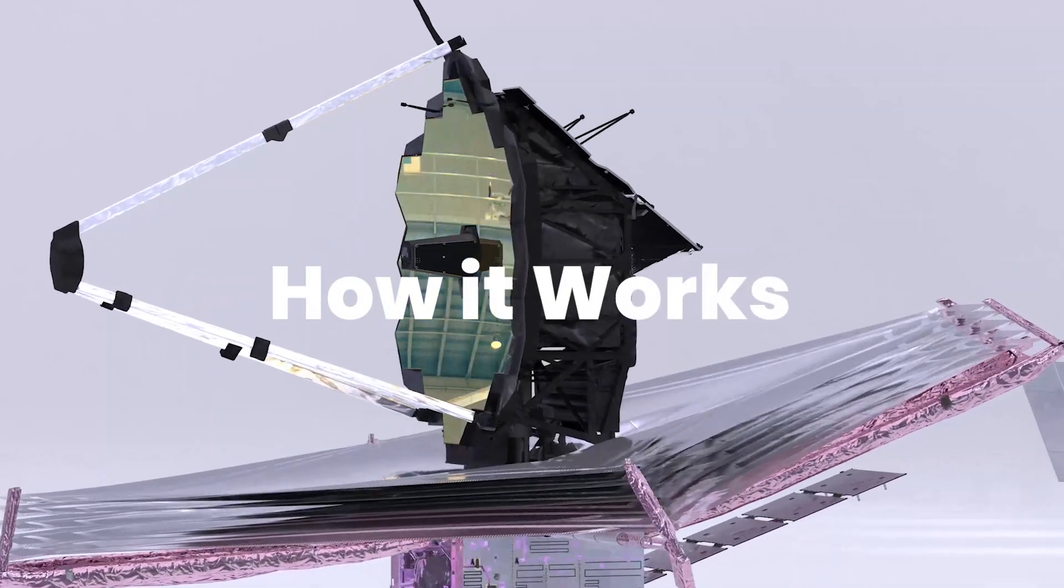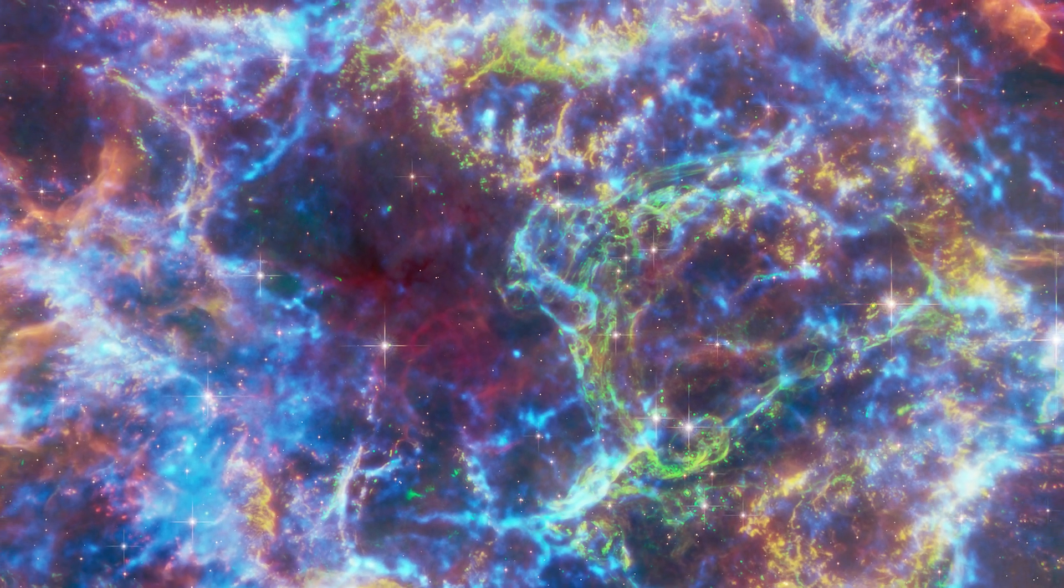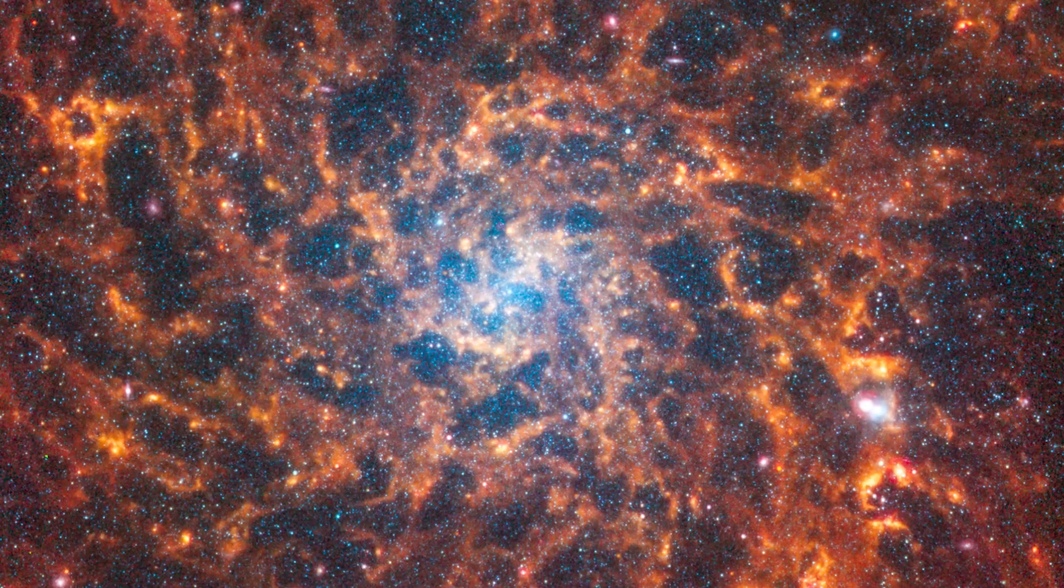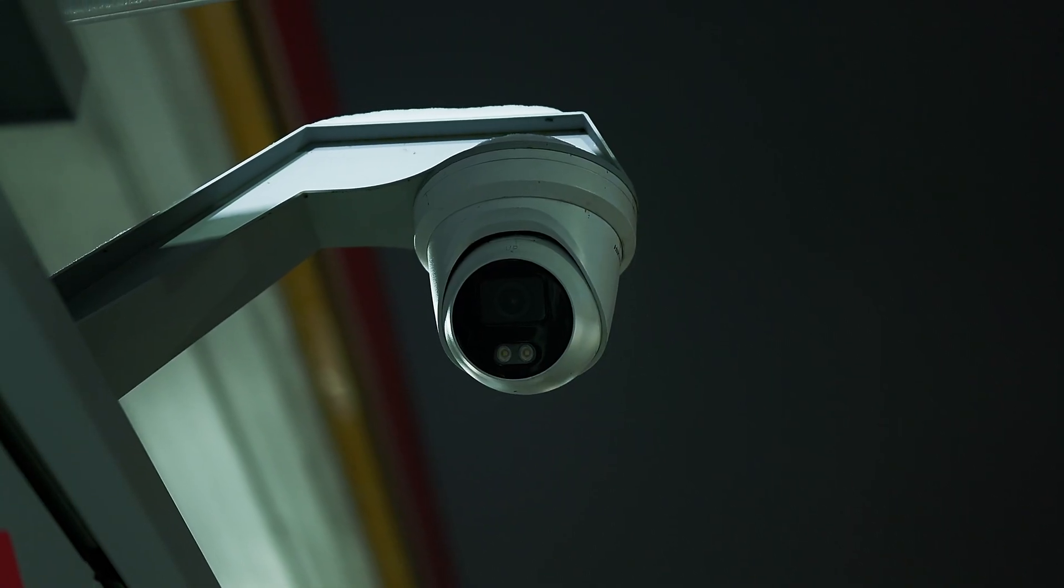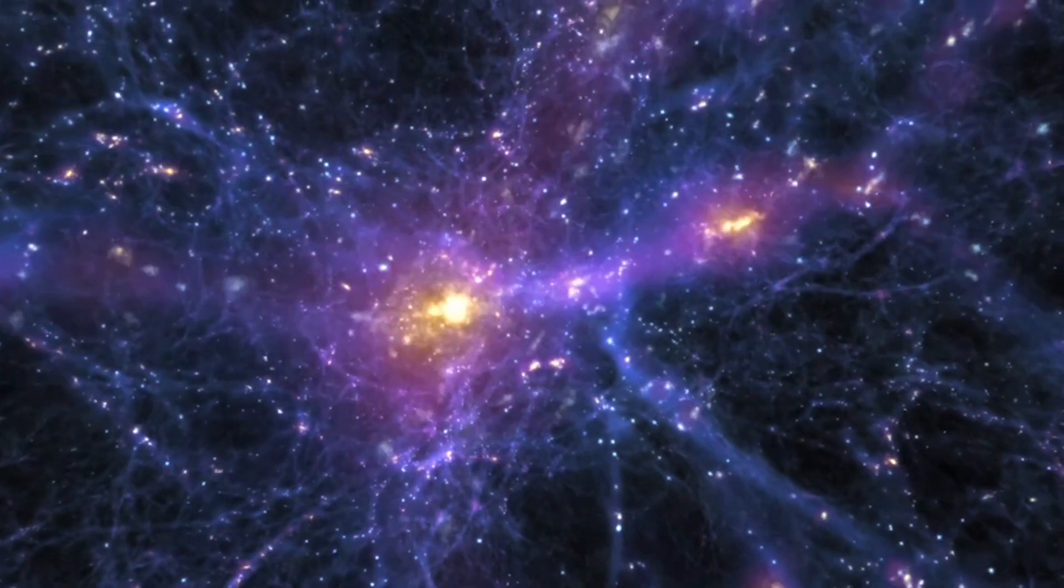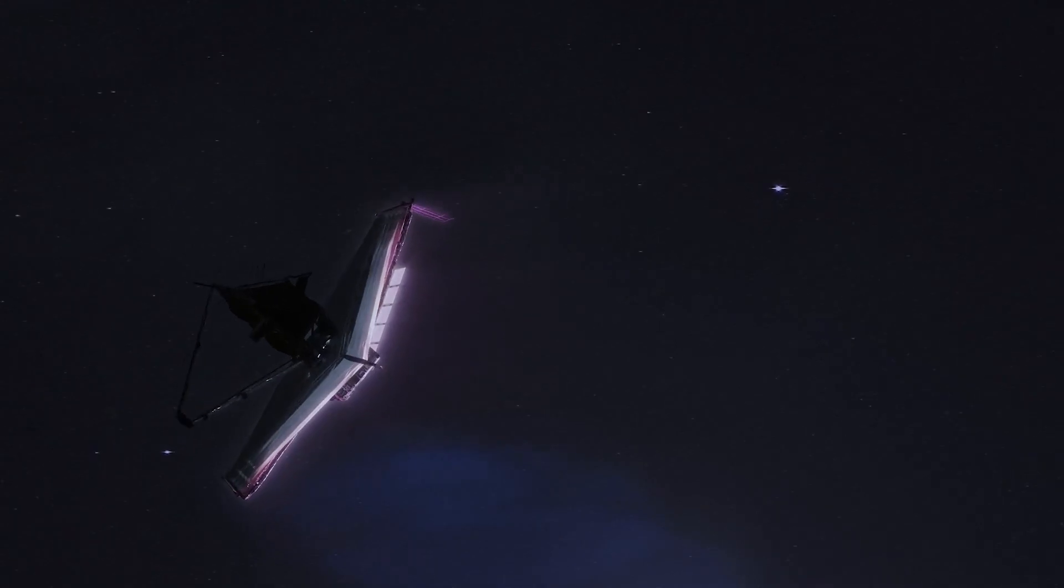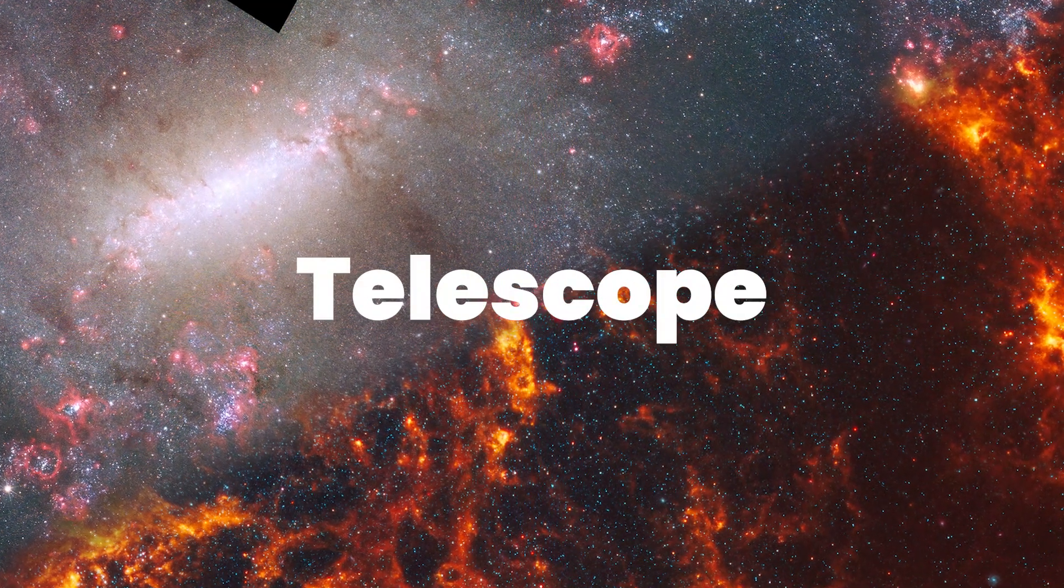Like any other telescope, the James Webb Space Telescope has the fundamental task of capturing light to reveal distant objects in space. However, what sets it apart is the type of light it observes. While our eyes perceive visible light, the James Webb Telescope operates in the infrared spectrum, akin to heat. Think of it as an advanced night vision camera for the universe. Its immense size allows it to gather even more light than its predecessors, enabling us to observe smaller and more distant objects. Moreover, being situated in space eliminates interference from Earth's atmosphere.